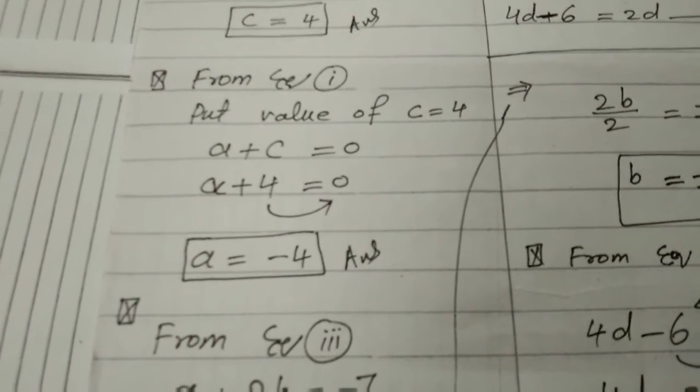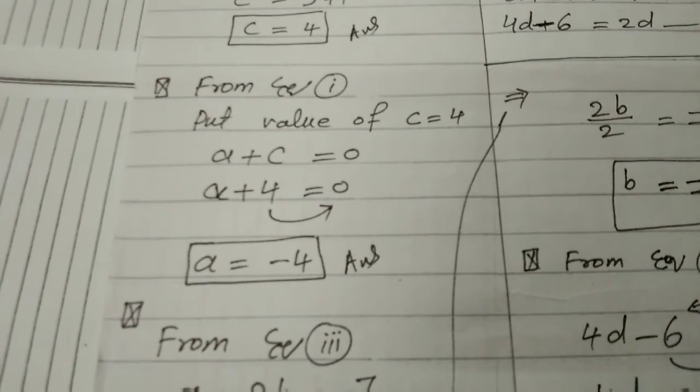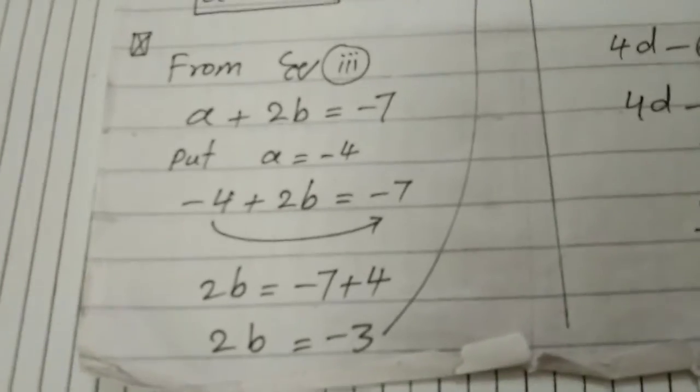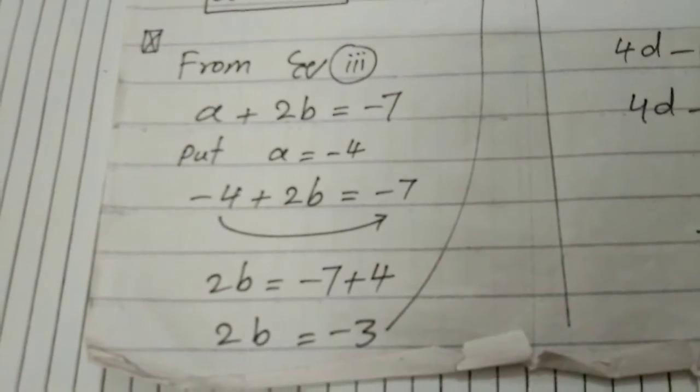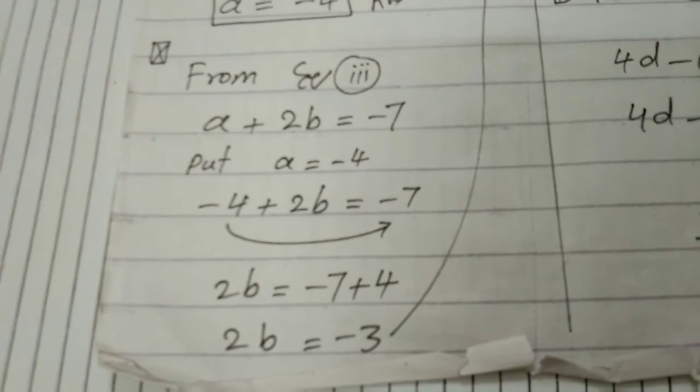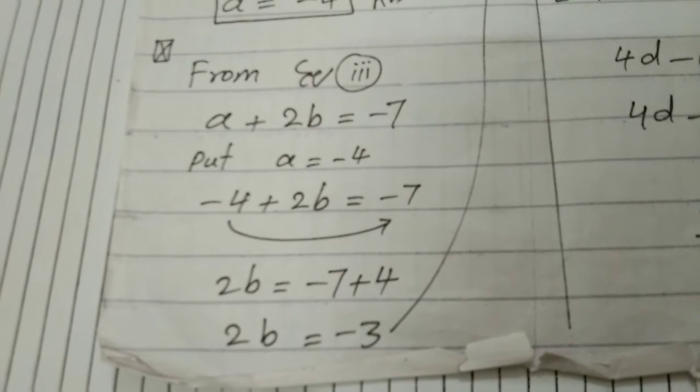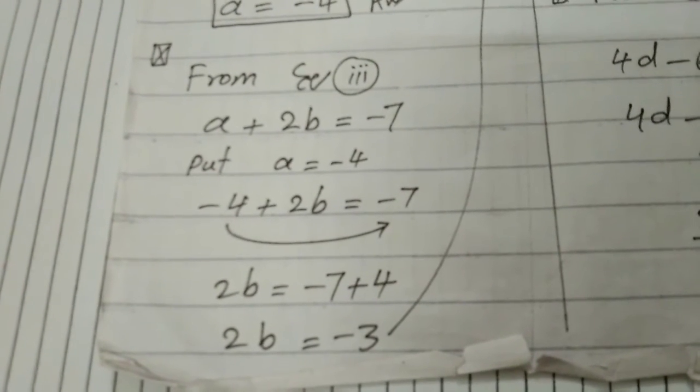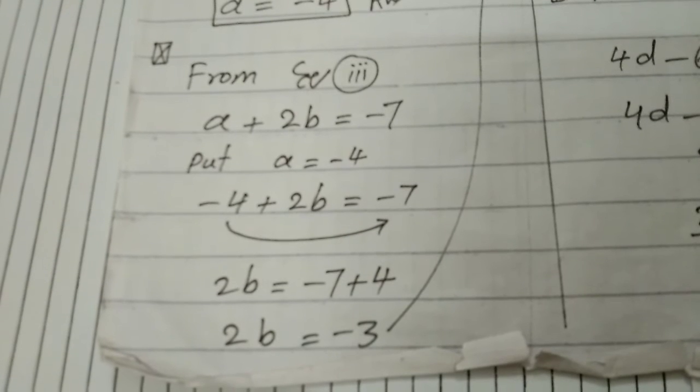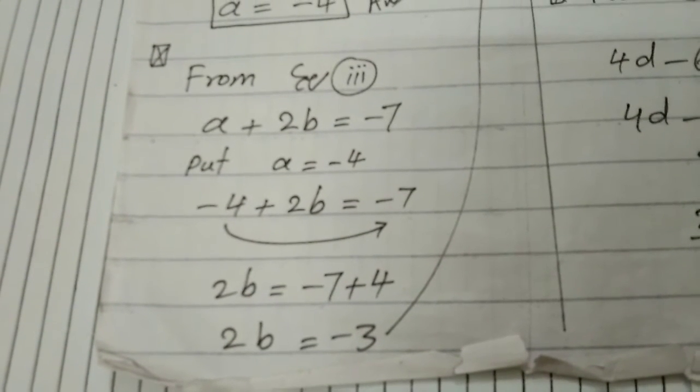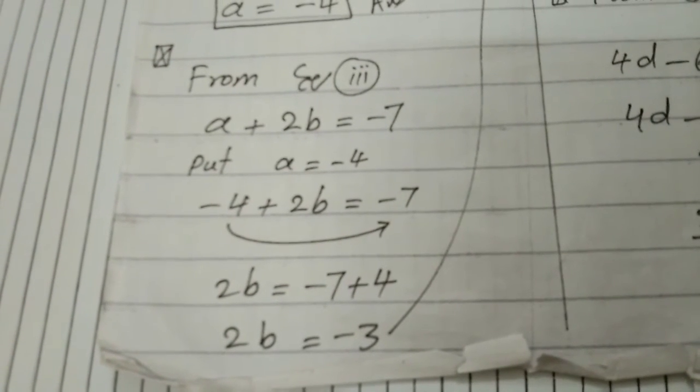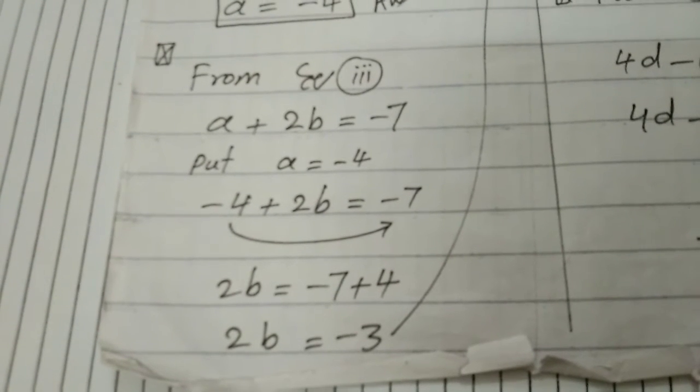Now move from equation 3. a plus 2b is equal to minus 7. Put the value of a is equal to minus 4. Minus 4 plus 2b is equal to minus 7. You can see minus 4 moving towards minus 7. Now it will be plus 4.